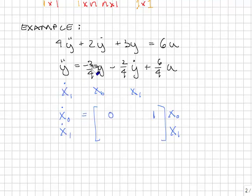This will be the A matrix. And you can see right from the equations that x0 dot is equal to x1, and x1 dot is equal to minus 3 fourths x0 minus 2 fourths x1. It falls right out from this equation right here.